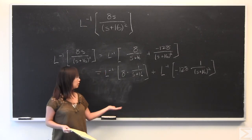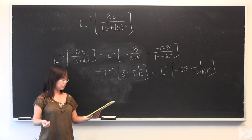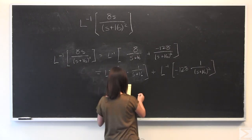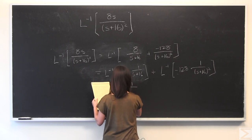OK, and we can match this up with the Laplace transform table that I have given you. And we see that this matches the form e to the negative a t, where a is equal to 16. So I will write that down.